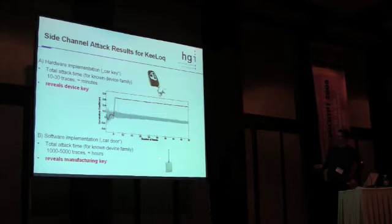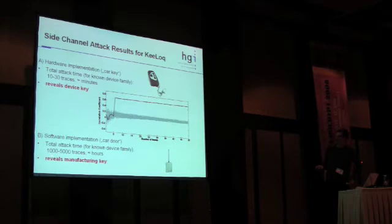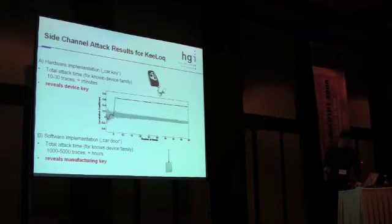If you now want to get the manufacturing key, you have to get hold of a car or a garage door receiver — the receiving device. We need a few thousand traces and we get the manufacturing key out. Even then the computation only takes a few hours.